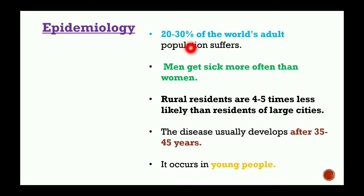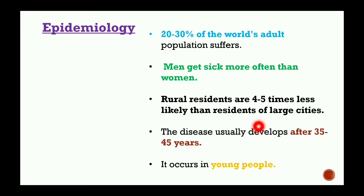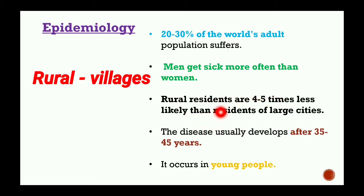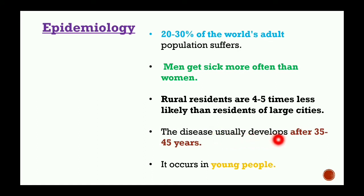Regarding epidemiology, arterial hypertension affects about 20–30% of the world population. Men are more affected compared to women. In cities, this disease is very common — approximately 4 to 5 times more prevalent compared to rural residents. The disease mainly develops in the age group of 35 to 45 years.